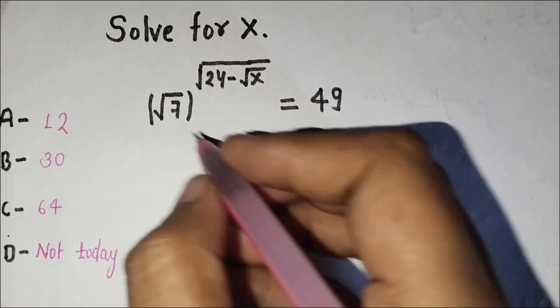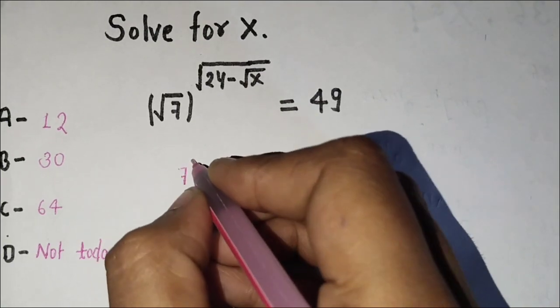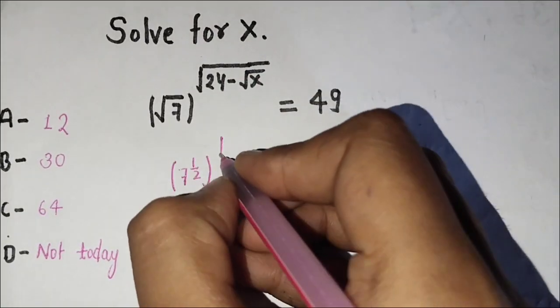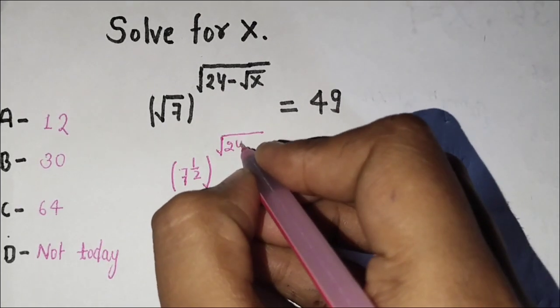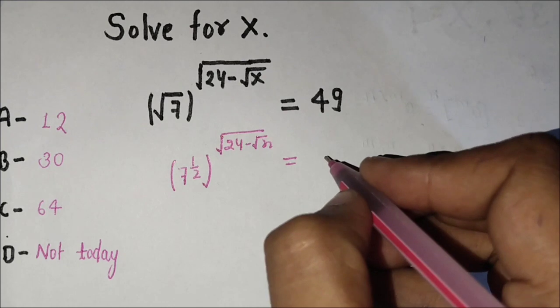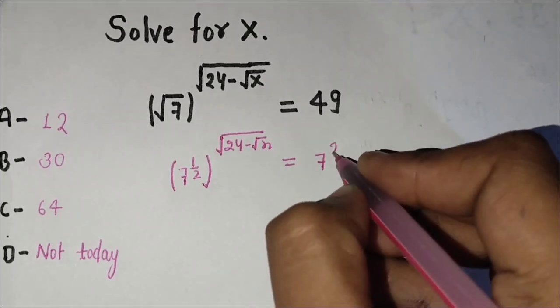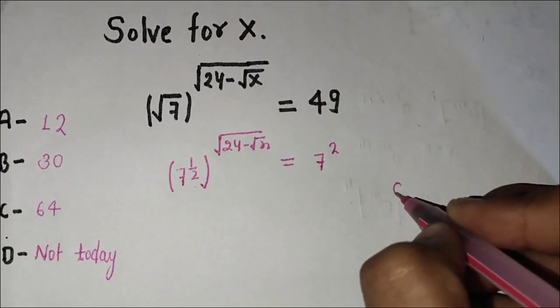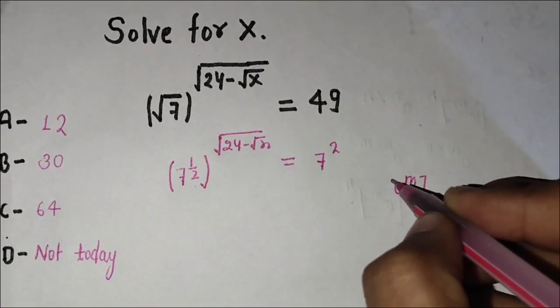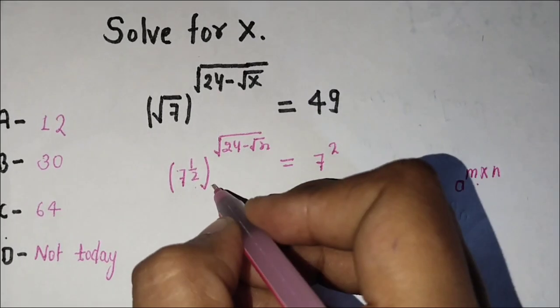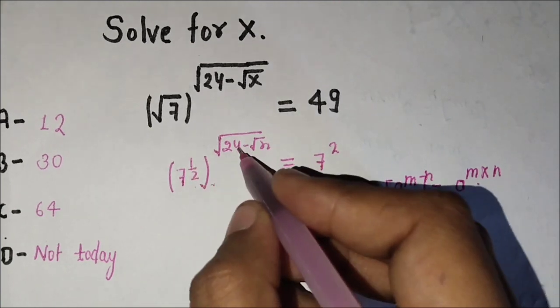I can write root 7 as 7 to the power 1/2, and 49 as 7 squared. Now I'll use this identity: a to the power m to the power n equals a to the power m times n. This is a to the m, this is a to the n.